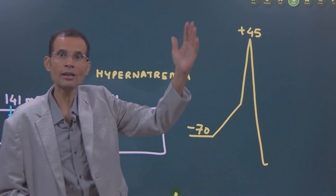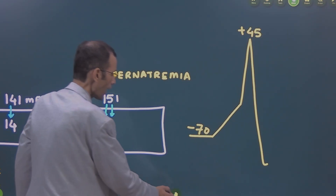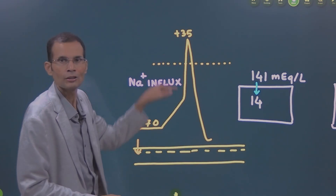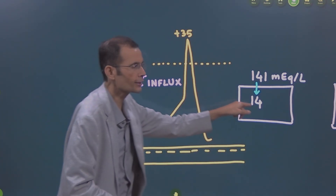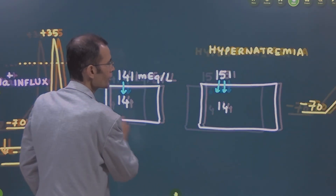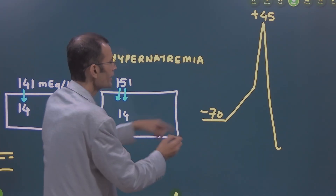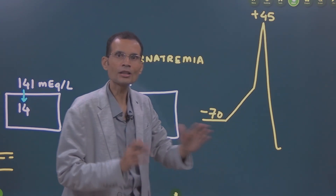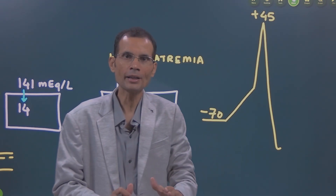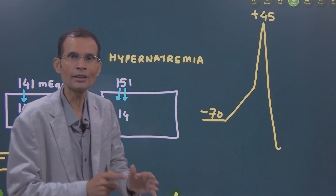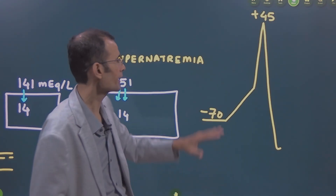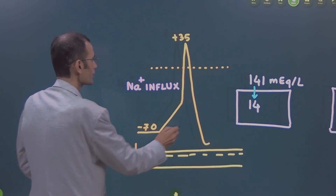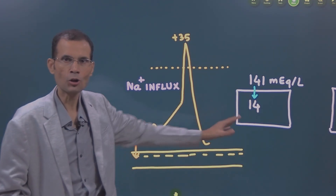The membrane will go to plus 45 millivolts. That means the amplitude of action potential has increased. This was the full response for this particular condition. And when the condition changed, again, this is a full response for this particular condition. So all or none law is still obeyed, but that 'all' is different for different sets of conditions. This is 100% for hypernatremia, whereas this is 100% for the normal condition.